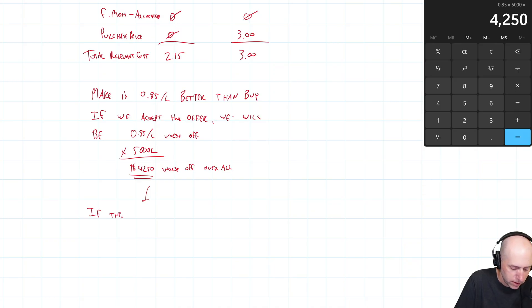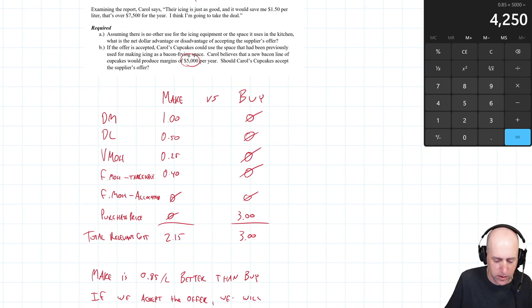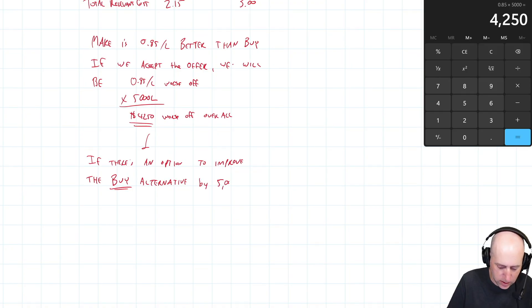We said that buying was $4,250 worse off. If we have an option to improve the buy alternative, right, this makes buy better, right. If we end up buying, we can use the space we use for icing to generate $5,000 a year. So buy $5,000, all of a sudden it was $4,250 worse off. Well, we've just improved it by $5,000. Where's it going to be now? Buy will be $7,500 better than make.